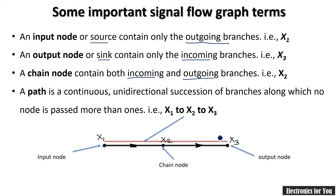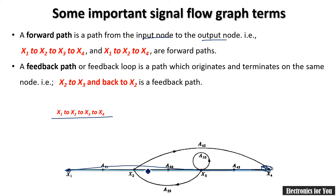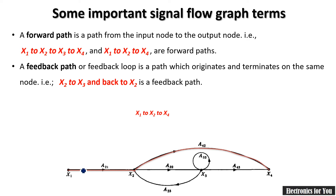Paths are divided into two parts: forward path and feedback path. A forward path is a path from the input node to the output node. Moving from x1 to x2 to x3 to x4 is one forward path. Another forward path is x1 to x2 to x4, which is the second forward path.